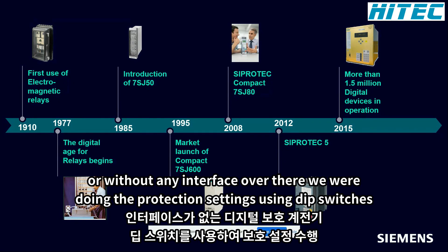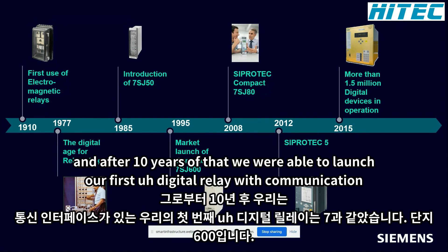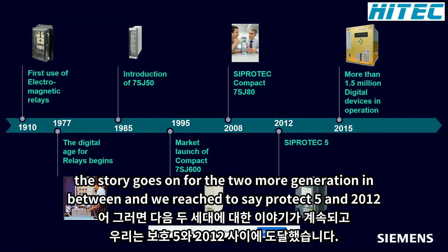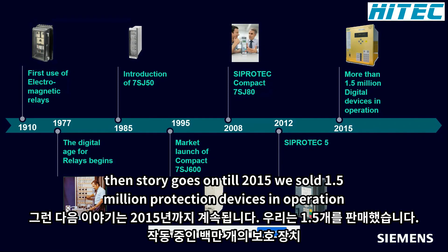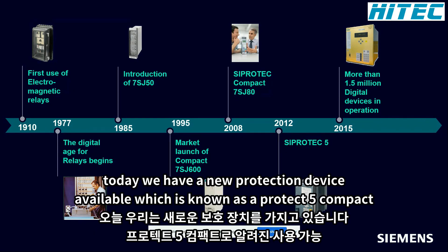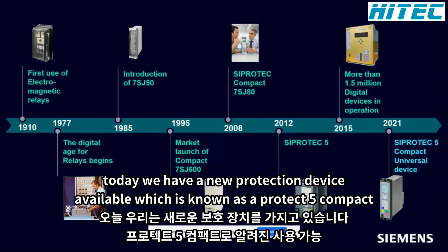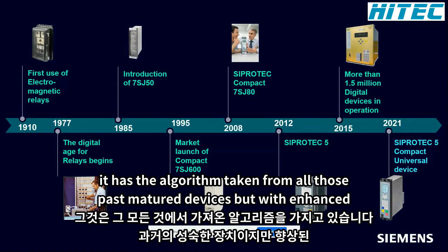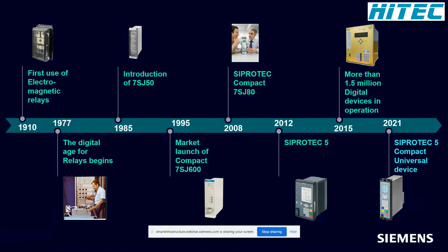Our first digital relay had no communication interface — settings were done using DIP switches. After 10 years we launched our first digital relay with a communication interface, the 7S just 600. The story continued through two more generations, and we reached Ciprotect 5 in 2012. By 2015, 1.5 million protection devices were in operation globally. Like a good cheese or wine, relays need time to reach maturity.